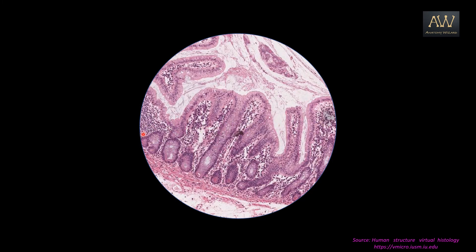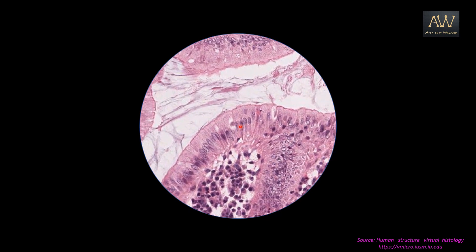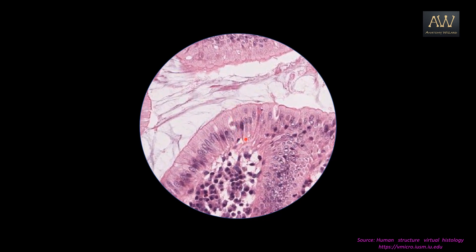Again in this slide, we need to observe the junction of the free space and the tissue. So let us zoom in a bit. Here you can clearly see the presence of oblong or oval shaped nuclei which are present in a single layer. Zooming in more, you can clearly see the columnar shaped cells with the oval nuclei, which are rather more towards the basal surface of the cells. So this is a typical example of simple columnar epithelium.